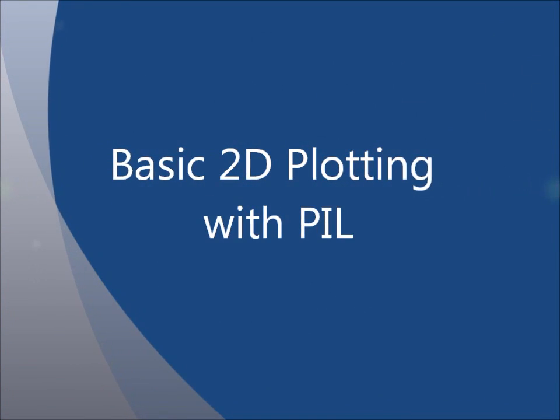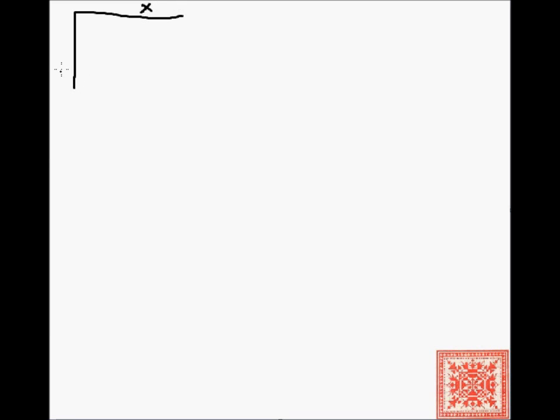In this screencast, we'll talk about some basic 2D plotting techniques with the Python image library. The Python image library has the origin of the coordinate system in the top left corner. This is the x-dimension, and this is the y-dimension.